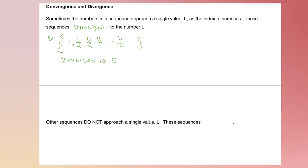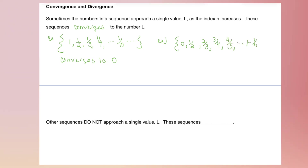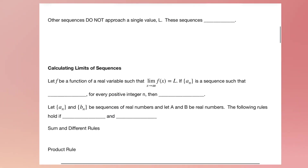Another example of a convergent sequence is 0, 1/2, 2/3, 3/4, 4/5, all the way to 1 minus 1/n. This converges to 1 because we have 1 minus a number getting closer and closer to 0, so it approaches 1. Sometimes sequences do not approach a single value L — these are called divergent sequences.